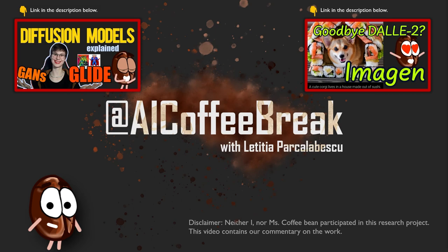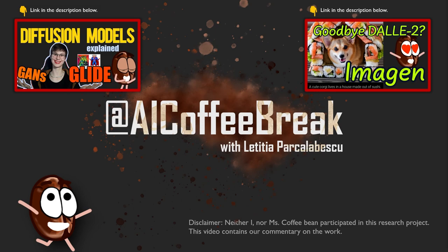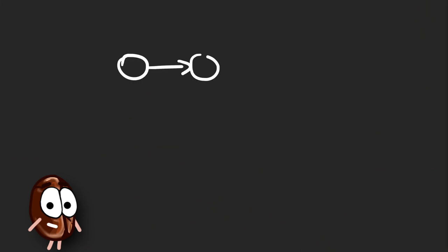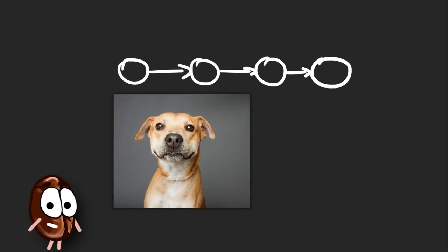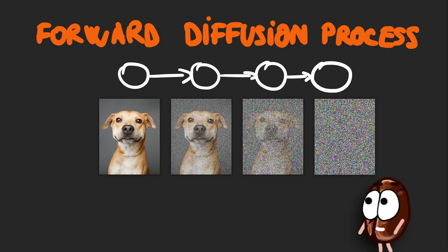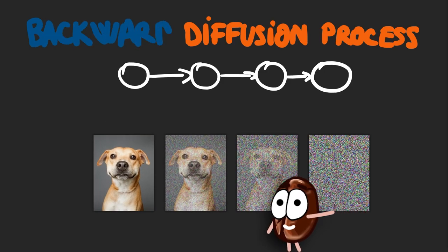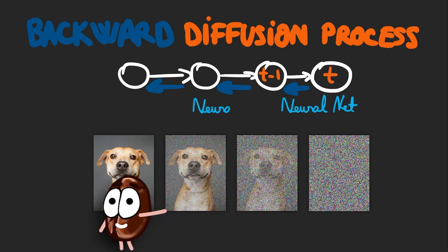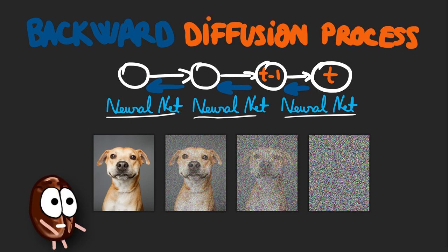As far as our explanations of diffusion models in general go, this video has the technically most correct version, because we cleared up a confusion that Ms. Coffee Bean had this whole time. But let's not get ahead of ourselves and talk about diffusion models first. The diffusion process is where you diffuse more and more noise into your image. So you take an image and in t steps you gradually add more noise to it, until at the last time step t the image is approximately just noise. Diffusion models go in the opposite direction — they learn to reverse the diffusion process. When we are trying to generate an image with a diffusion model, we follow each of these t steps and reduce the noise gradually, step by step.